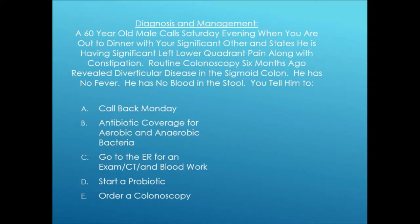Clinical case: a 60-year-old male calls on Saturday evening with significant left lower quadrant pain and constipation. He had diverticular disease found on colonoscopy six months ago, no fever, no blood in stool. The best answer is to send him to the ER for exam, CT, and blood work — this is the first episode, and it could be a UTI, perforated diverticulum, appendicitis, Crohn's, or many other things. Just calling in antibiotics over the phone is risky.